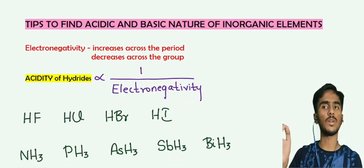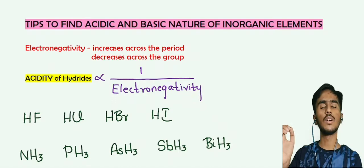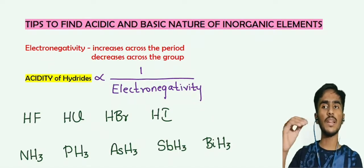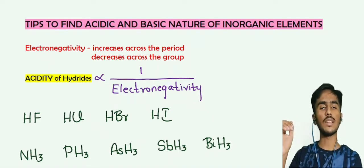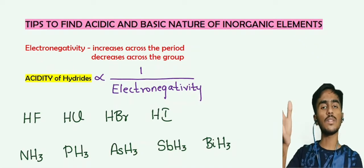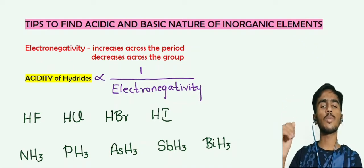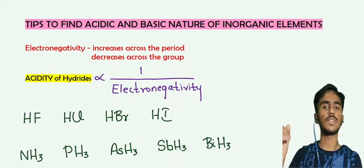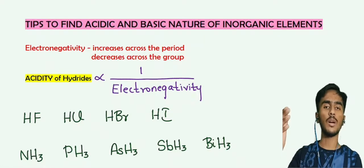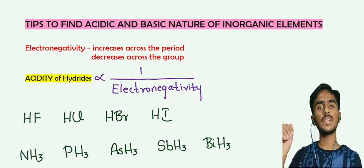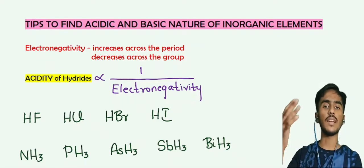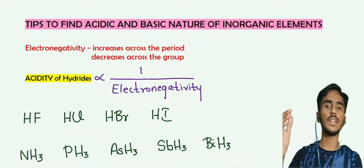Electronegativity is a trend. In a period, the electronegativity increases. In a group, the electronegativity will decrease. We are talking about the acidity in relation to this electronegativity.